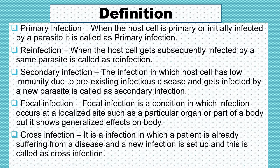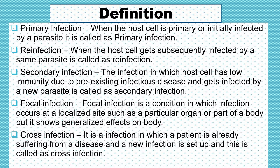Fifth is cross infection. It is an infection in which a patient is already suffering from a disease and a new infection is set up, and this is called cross infection. For example, a person suffering from pneumonia gets additionally infected by tuberculosis. Such situations where a person suffers from multiple infections are called cross infections.